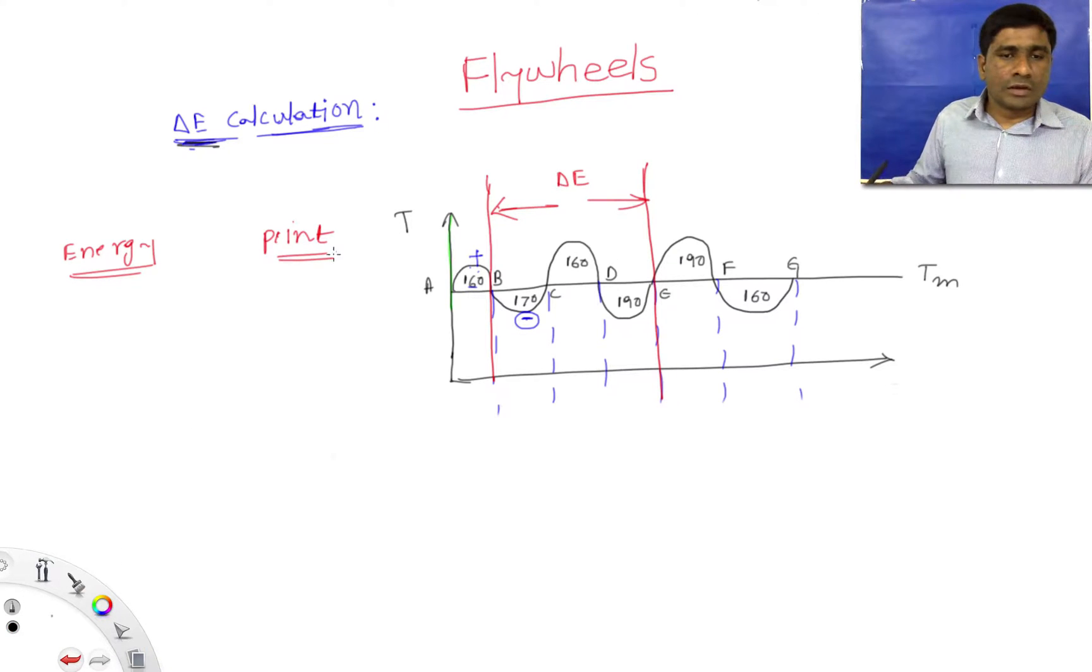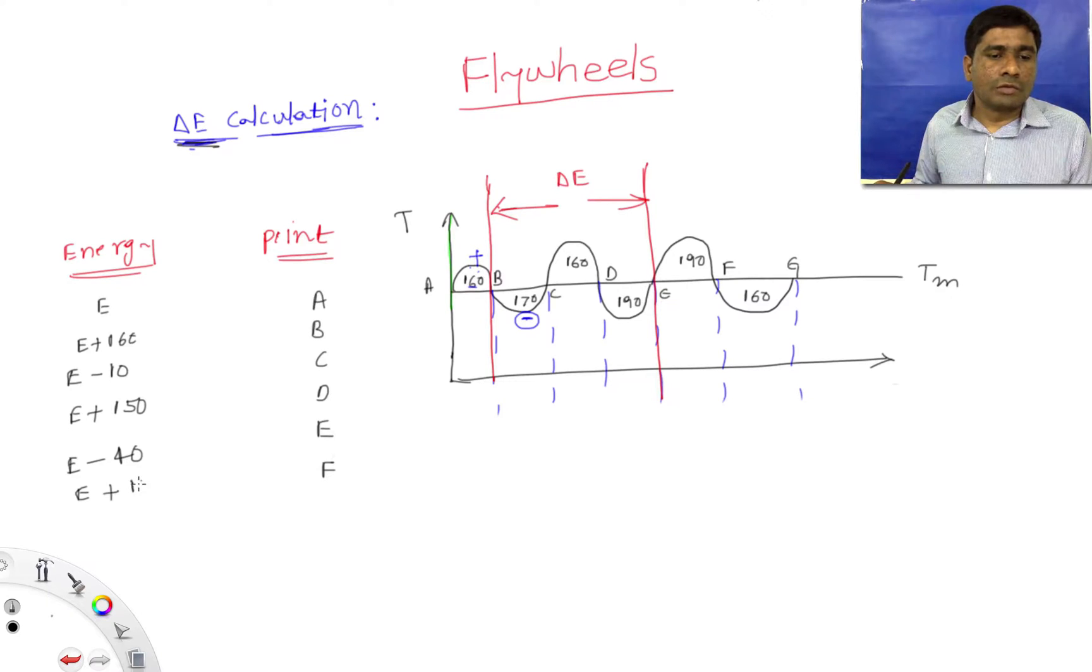If I take point A and I will assign energy E randomly, at point B that is E plus 160. At point C, that is E plus 160 minus 170, which is E minus 10. At point D, E minus 10 plus 160, that is E plus 150. At point E, E plus 150 minus 190, that is E minus 40. At point F, again E minus 40 plus 190, that is E plus 150. And at point G, again this is E minus 10.